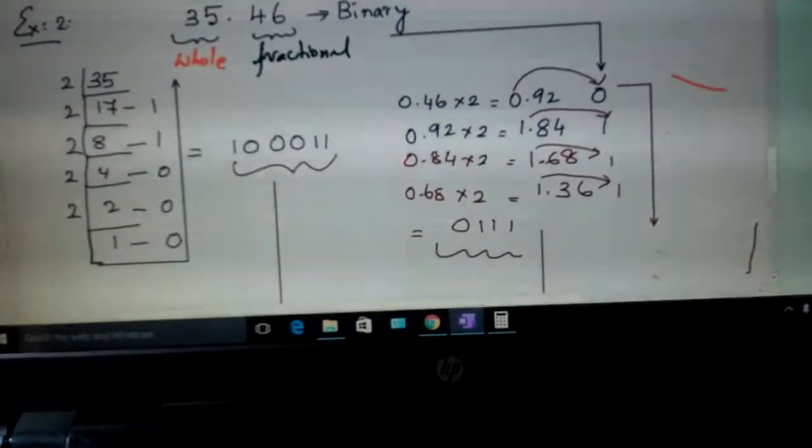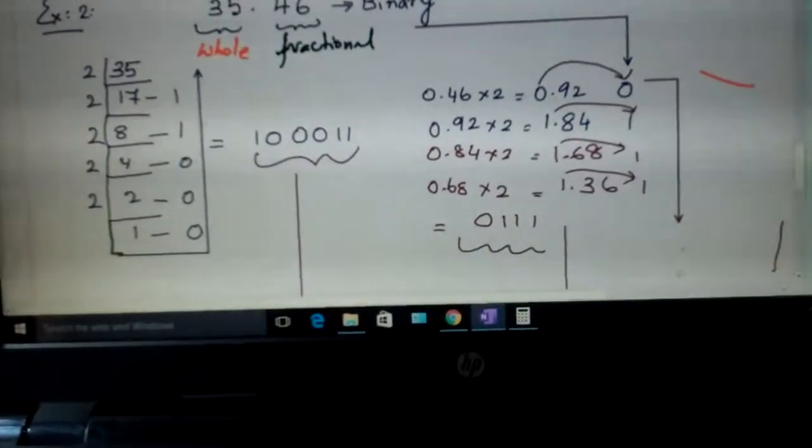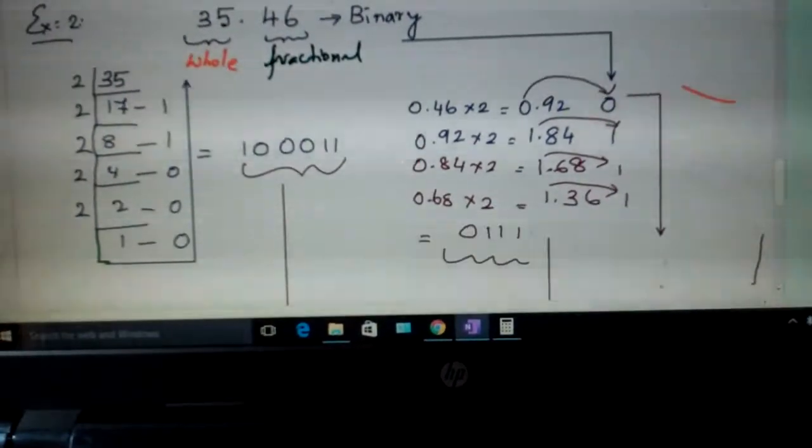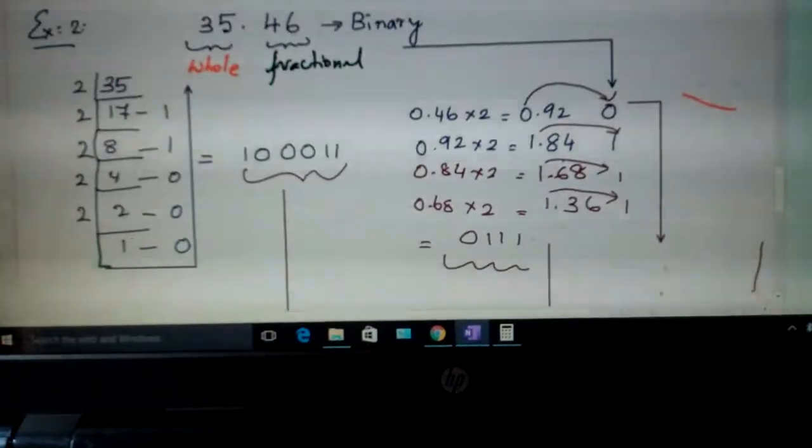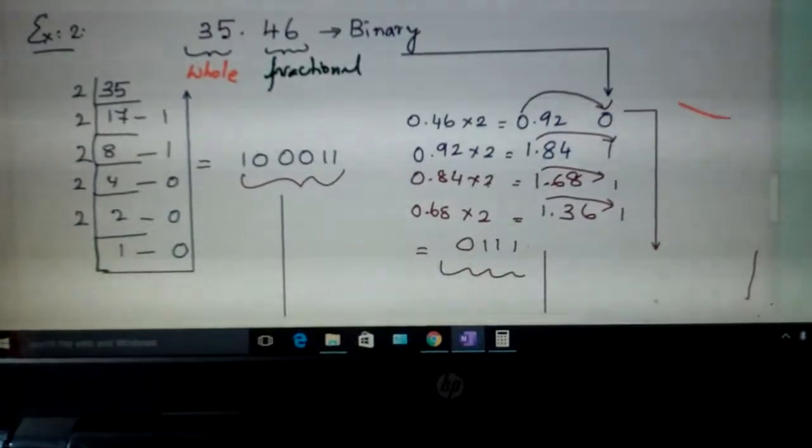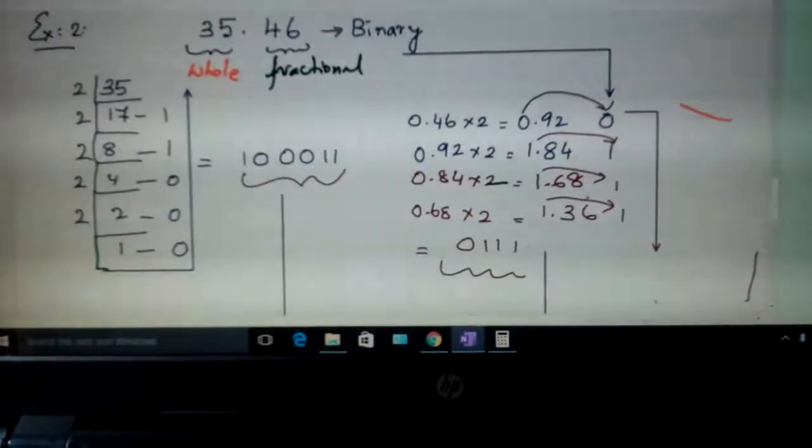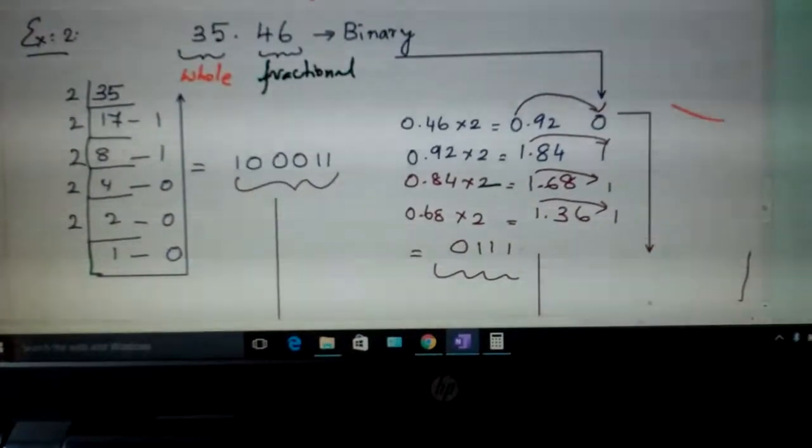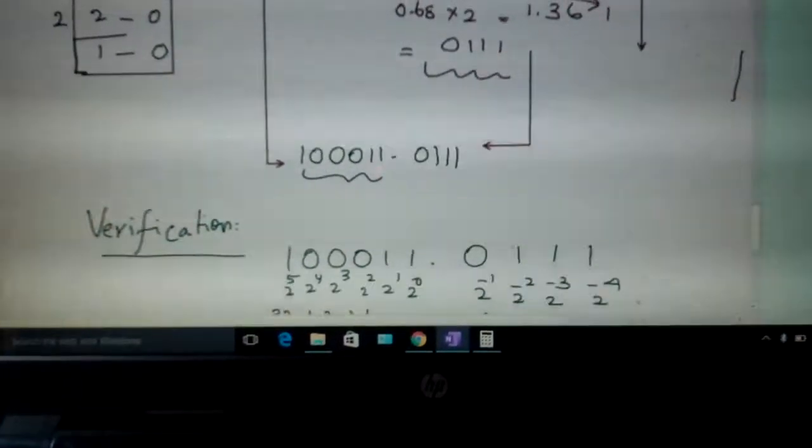And the fractional part is 0.46. Multiply it with 2, we will get 0.92. Write 0 here. 0.92 multiply it with 2, you get 1.84. Write 1 here. 0.84 multiply again with 2. You get 1.68. Write 1 here, 0.68 here. And you can continue.